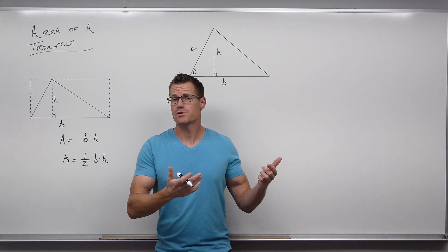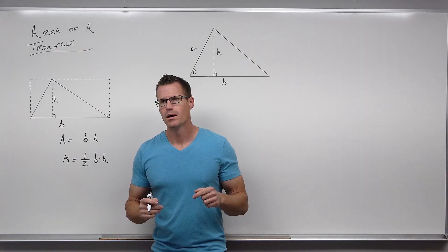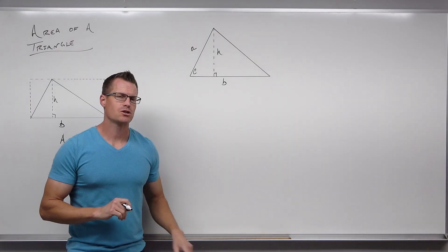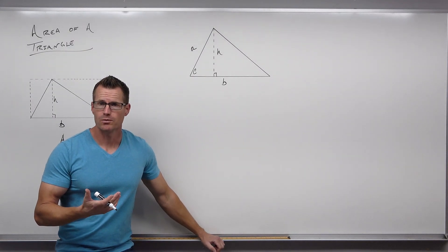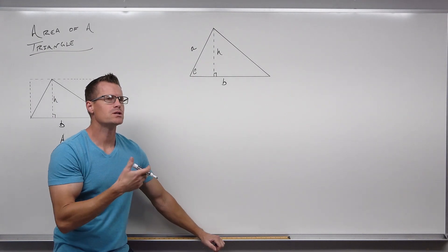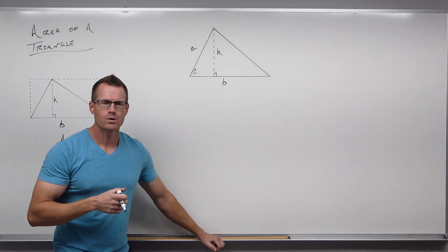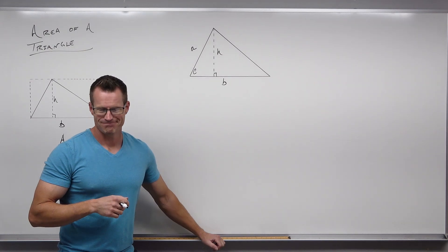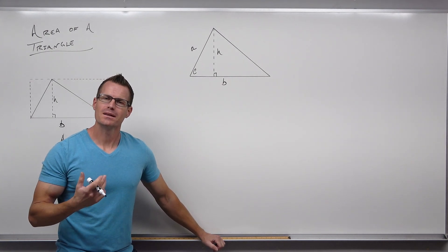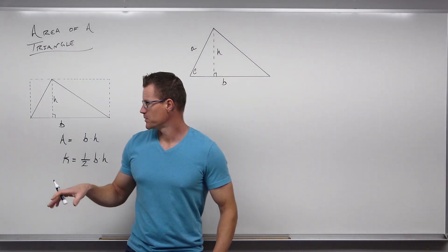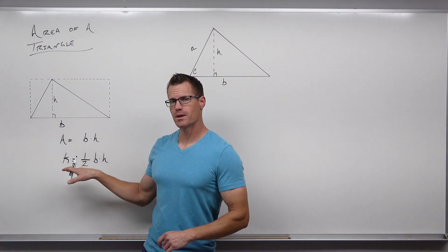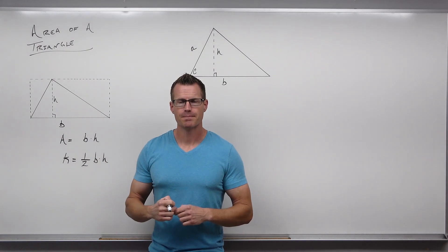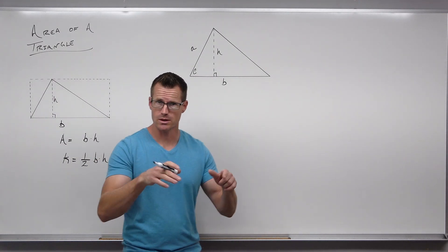Now, what if we knew two sides and an angle between them, but didn't know the height? Is there a way to figure out the area? Let's try. Using the formula, we know the base and the side — but what if we don't know the height? Is there a substitution we can make? Area of a triangle is one half base times height. We'd know this side, this side, and the angle — but not the height.